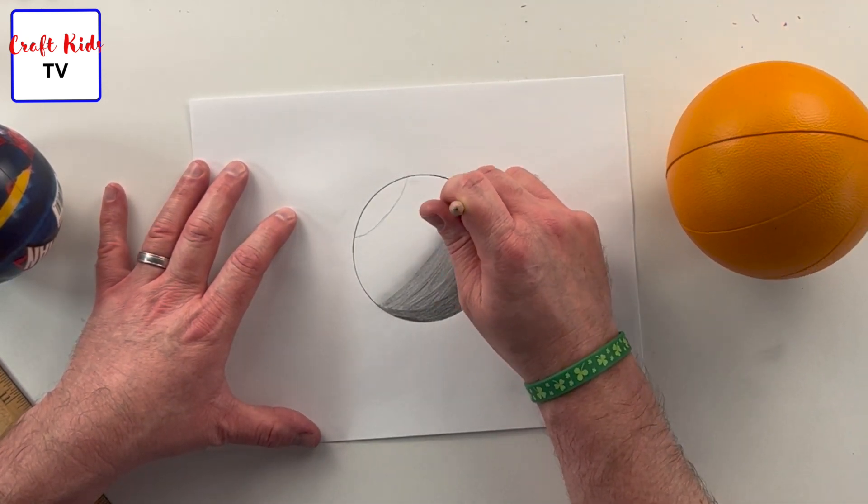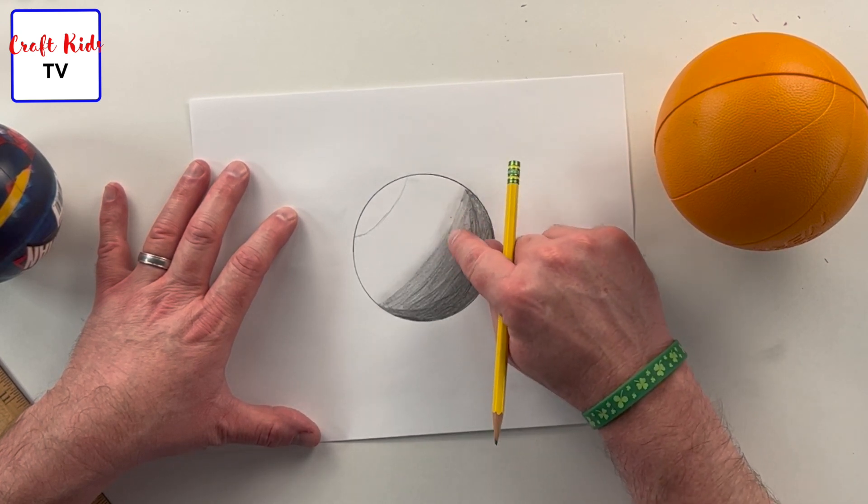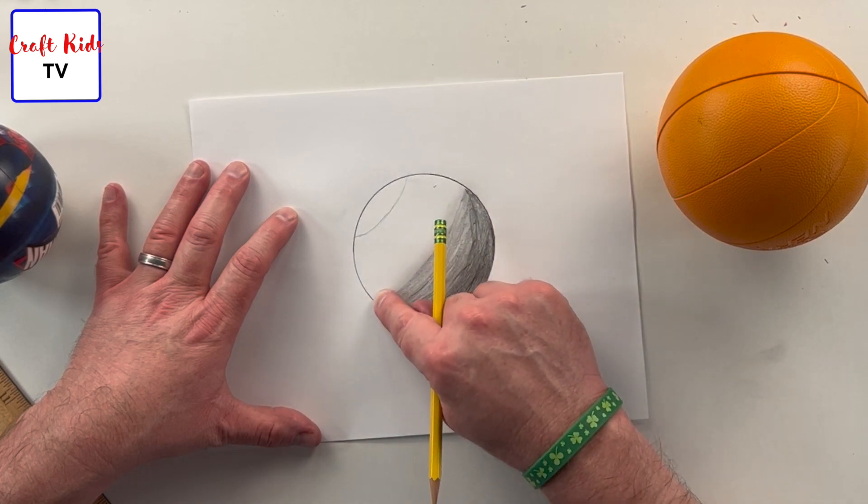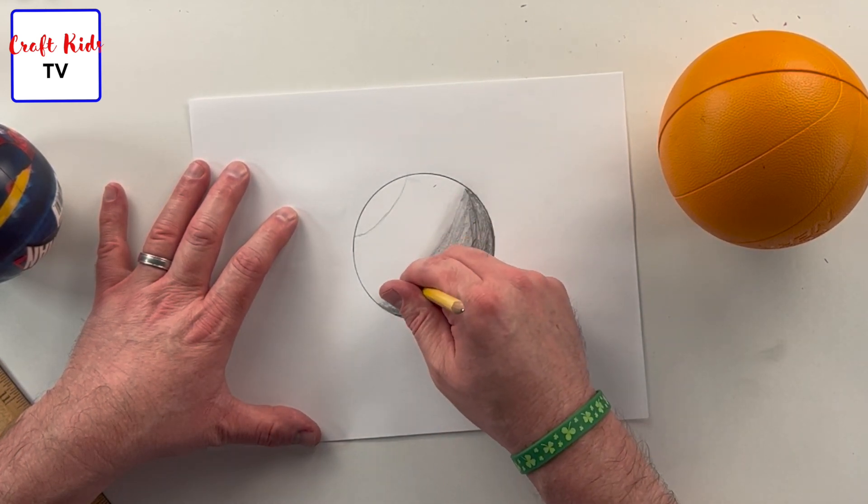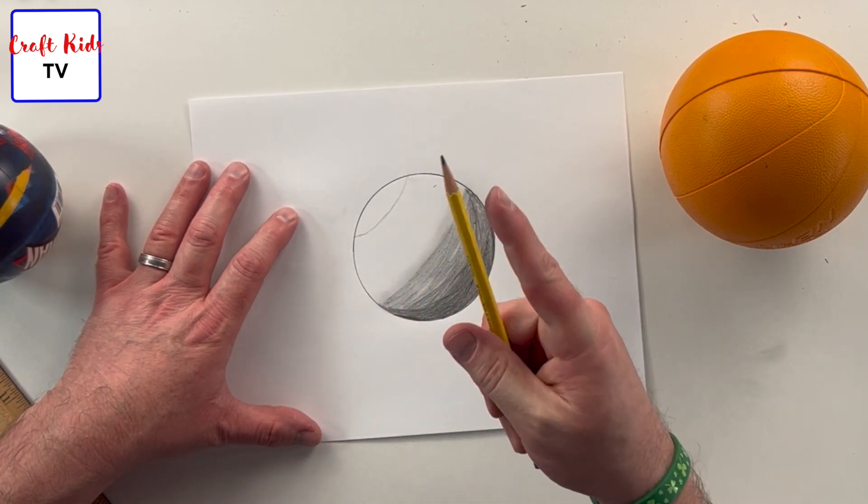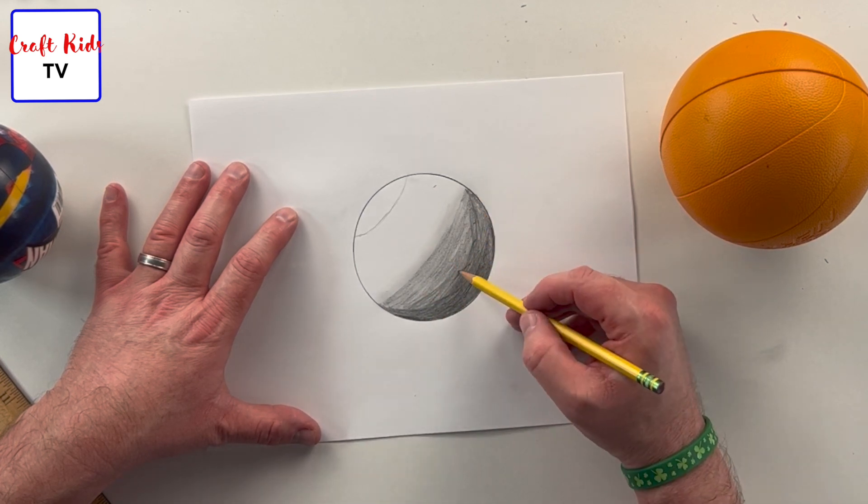If you have anything that looks too dark, like this is bothering me, it's too dark, just go over it. It doesn't even hurt to leave those little eraser shavings in there, it actually helps kind of blend everything back together, and you can continue to do that until you feel good about it.